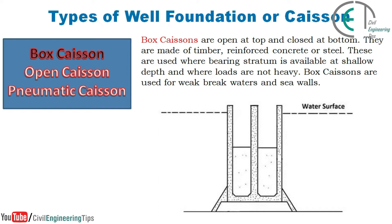Now let's discuss the types of well foundation, or caisson. There are three types: box caisson, open caisson, and pneumatic caisson. Box caissons are open at the top and closed at the bottom. They are made of timber, reinforced concrete, or steel. They are used where a higher bearing stratum is available at shallow depth and where loads are not heavy.